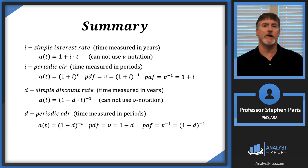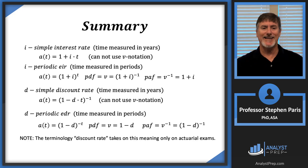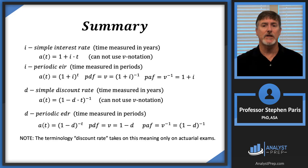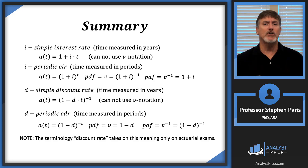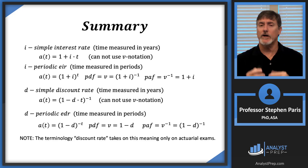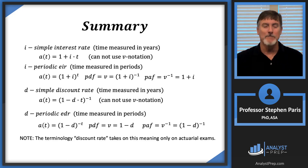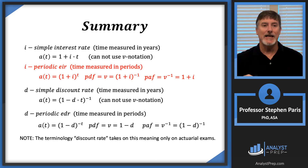I want to warn you: the terminology 'discount rate' takes on this specific meaning only on actuarial exams. If you're taking a university class in finance or economics and they say 'use a discount rate of 6%,' what they really mean is to use that interest rate to discount amounts from one time period back to another — so they mean an annual effective interest rate of 6%. They ain't wrong, they're just different. Don't think they're wrong and you're right — that's the terminology used in practice and in finance courses.